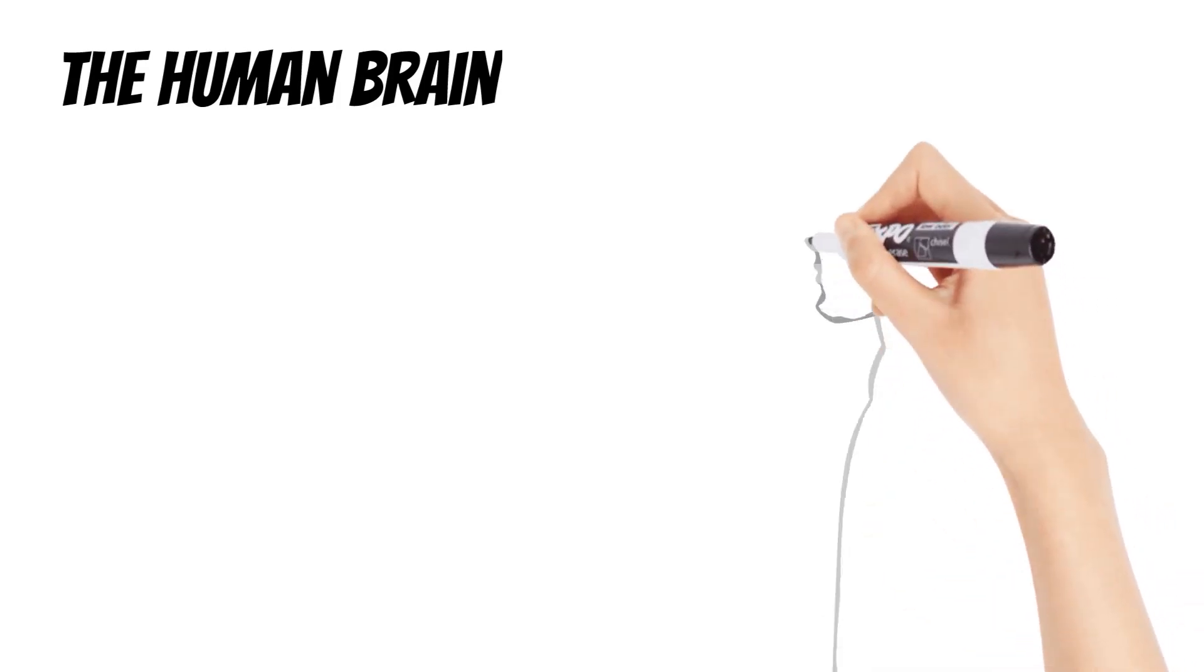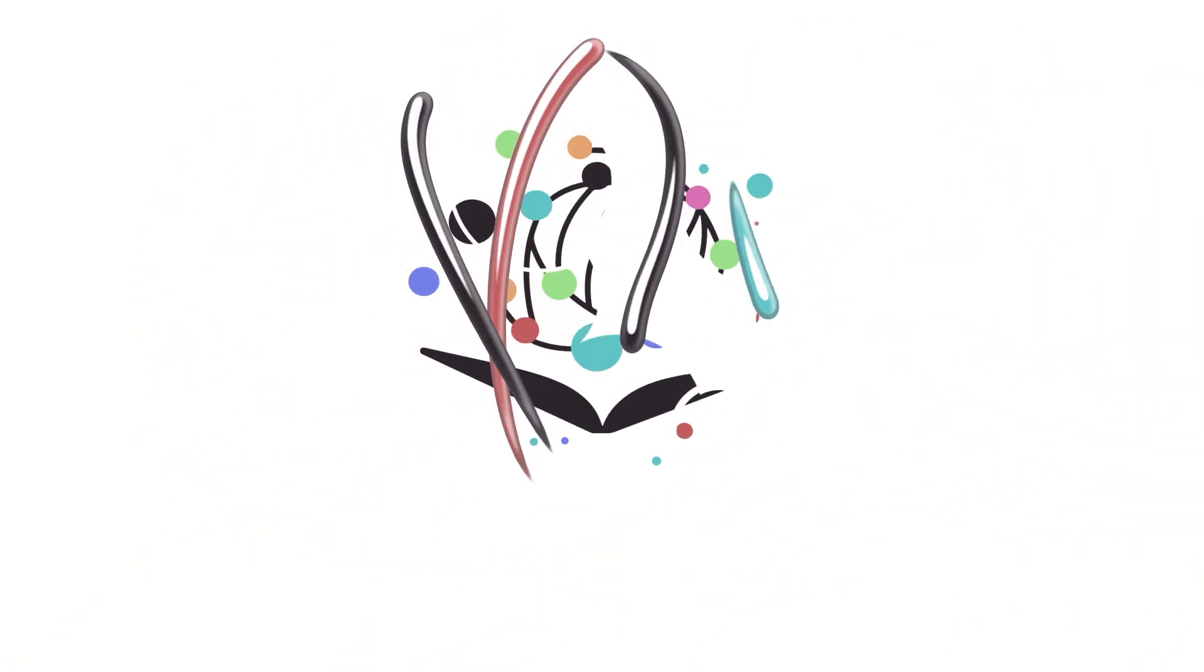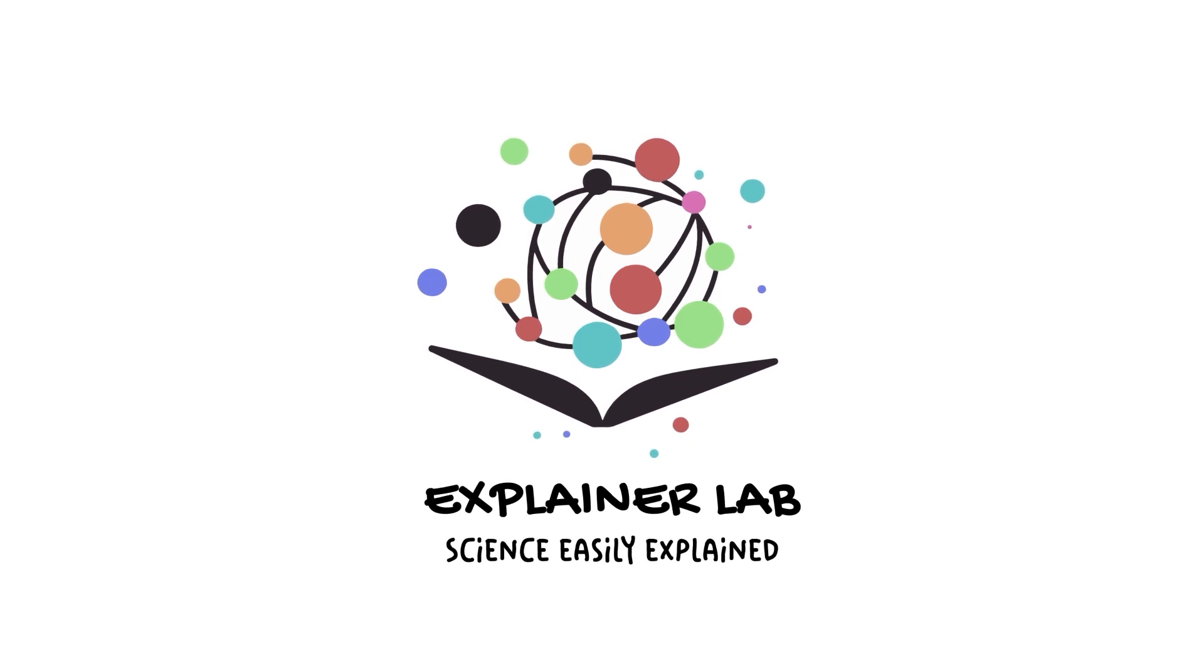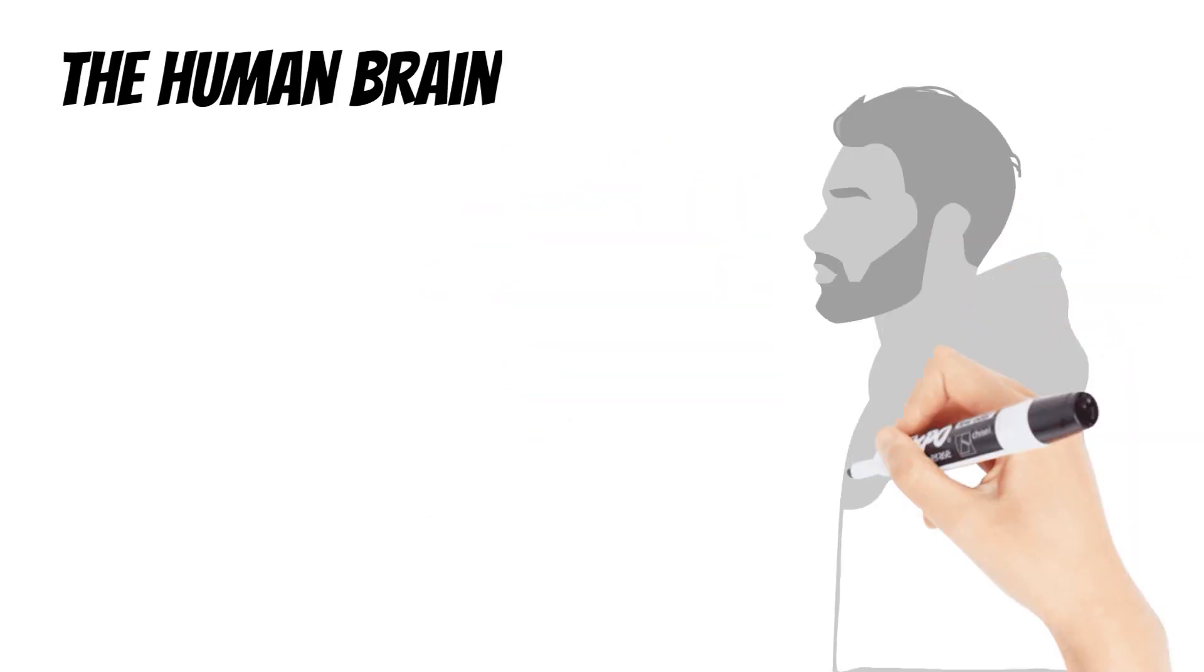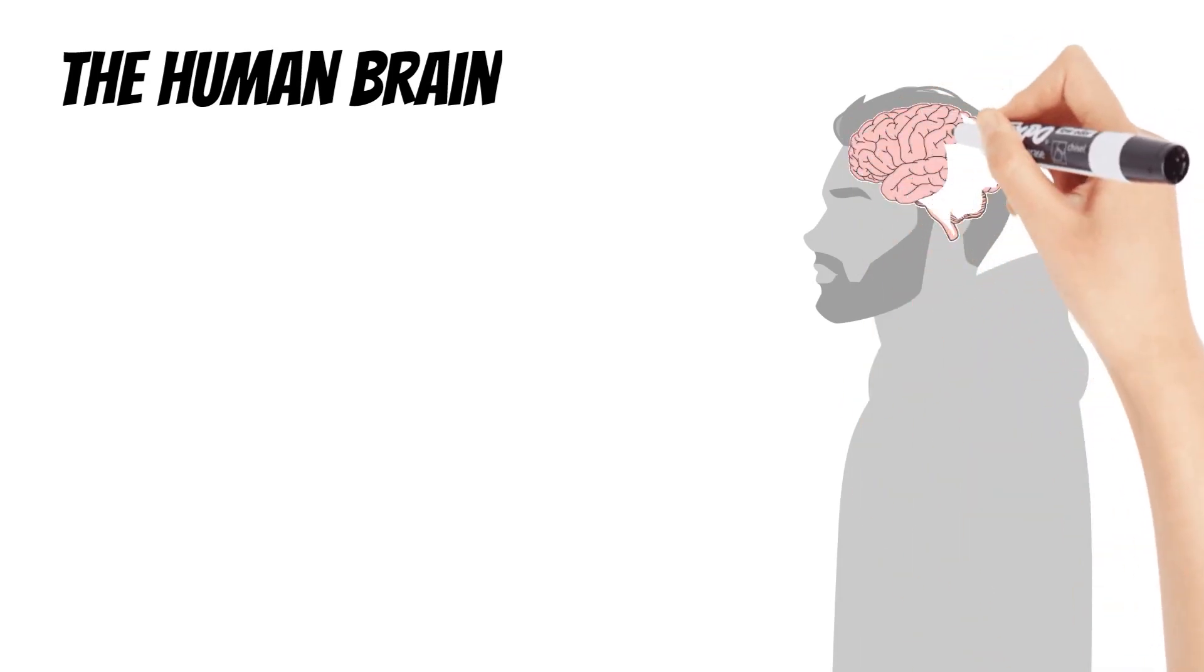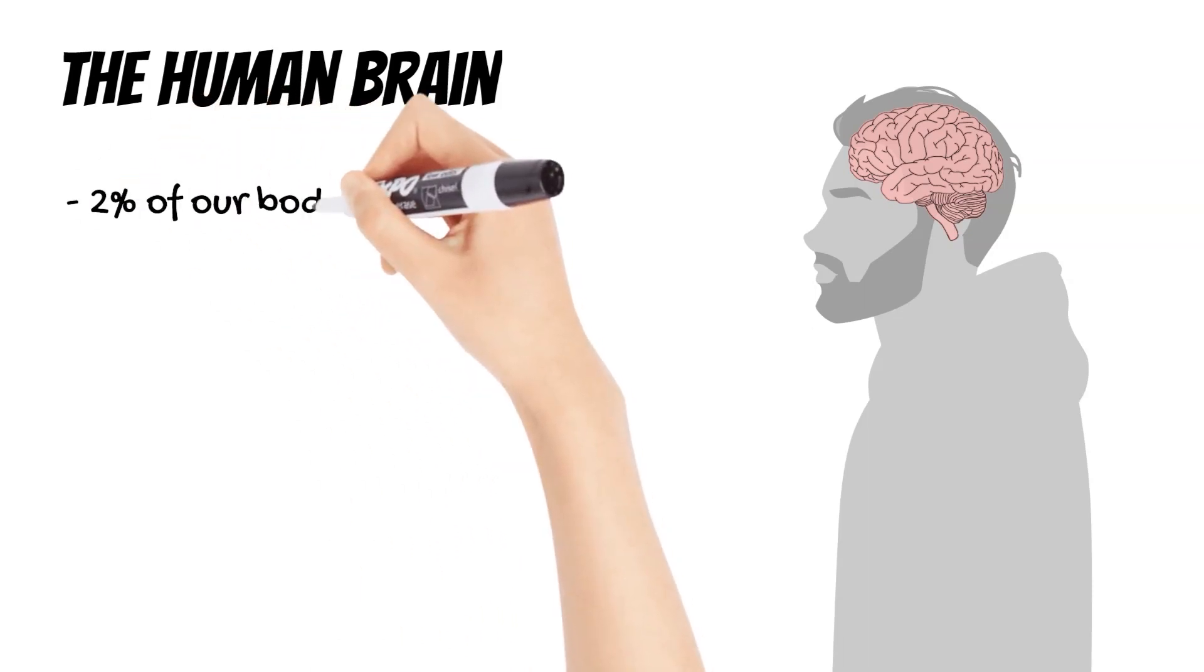Step into the explainer lab once more as we embark on an in-depth exploration of the human brain. This organ, a mere 2% of our body weight, is the master controller of our thoughts, emotions, and the vast array of intricate systems that keep us alive and thriving. Today, we delve deeper than ever into the brain's anatomy, functions, and the marvel of its design.